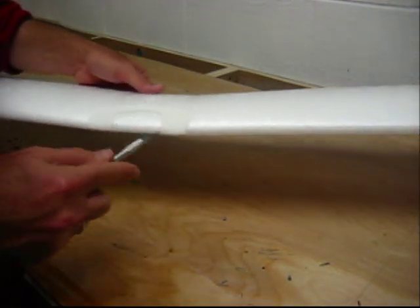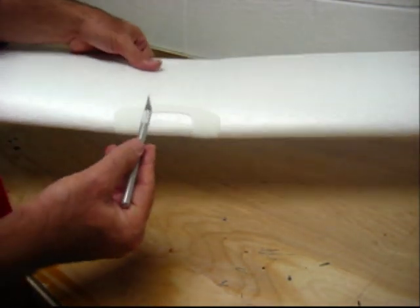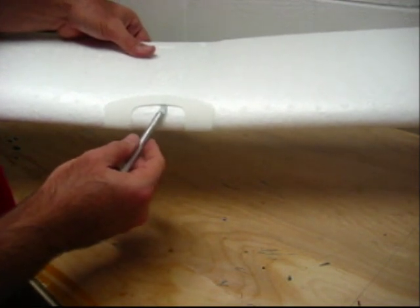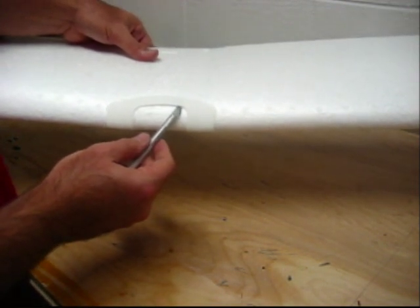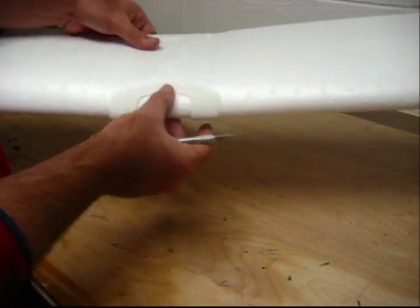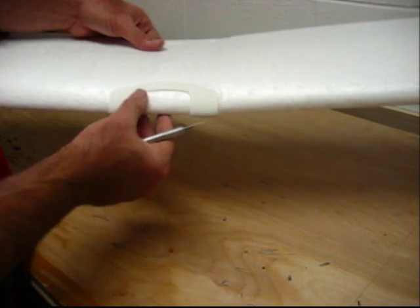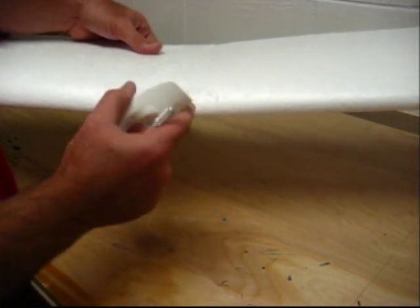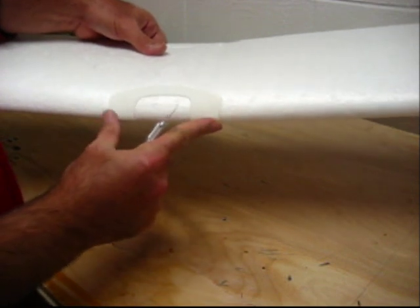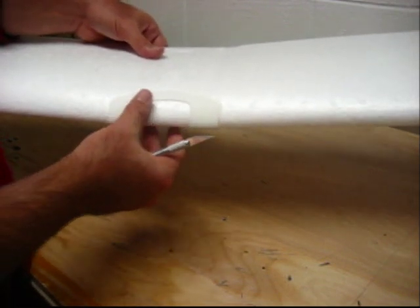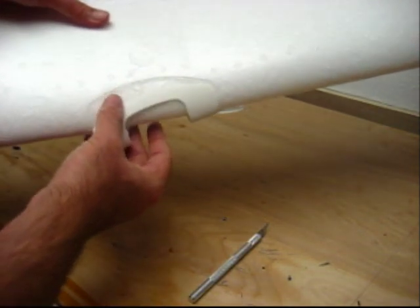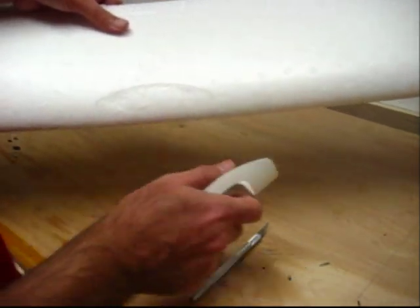To remove these, take your number 11 knife and gently cut in there. You'll have to work around and get all the pieces. Just take your time with the little bit of glue holding it on. Sometimes they pop off, other times it takes work, but don't yank on it. You could break the plastic or worse yet, rip out a huge chunk of foam.